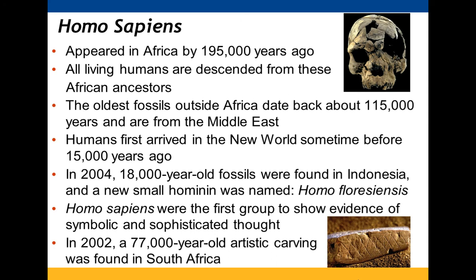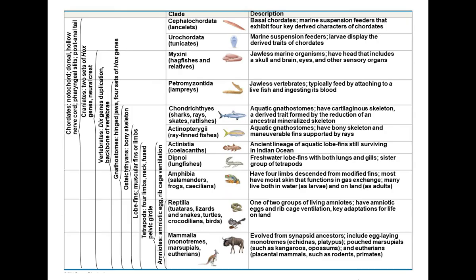Homo sapiens showed up about 195,000 years ago — this is where modern humans came from. The oldest Homo sapiens fossils are about 15,000 years old from the Middle East. The study of human origins is called paleoanthropology, and hominins are mostly related to humans. That's the end of the chapter on vertebrate diversity.